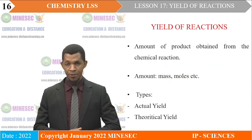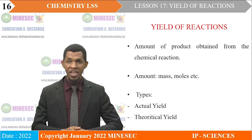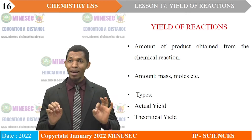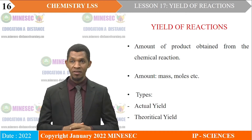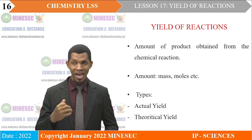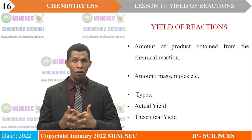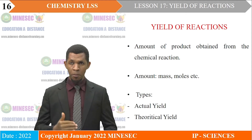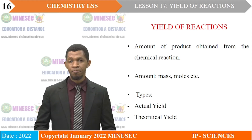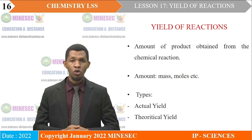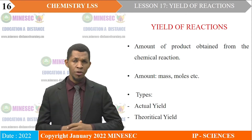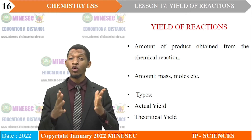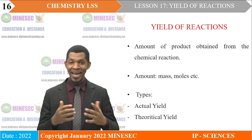Yield of reactions — by definition, the yield of a reaction is the amount of product obtained from the chemical reaction. Talking of amount of product, we mean the mass of the product, the number of moles of the product, or the volume of the product if the product is a gas. There are two types of yield: the actual yield and the theoretical yield.